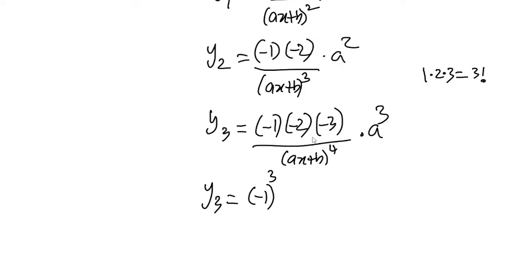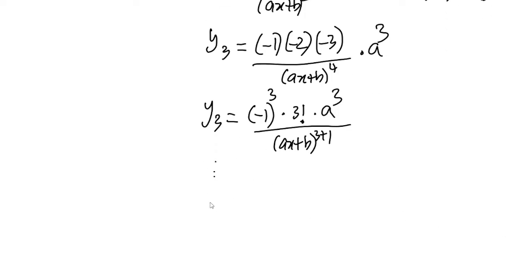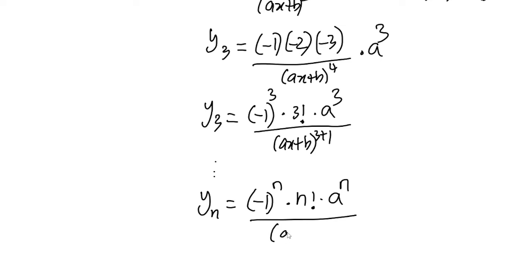So in general, yn = (-1)^n · n! · a^n / (ax+b)^(n+1). Looking at y3: minus sign gives (-1)^3, the product 1·2·3 = 3! = factorial, a^3, and the denominator is (ax+b)^(n+1). So the general formula is yn = (-1)^n · n! · a^n / (ax+b)^(n+1).